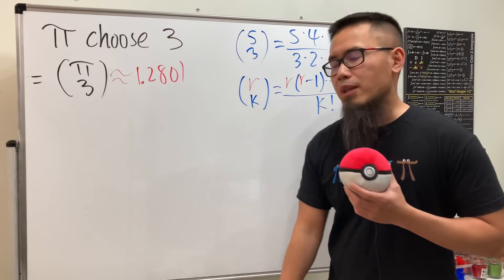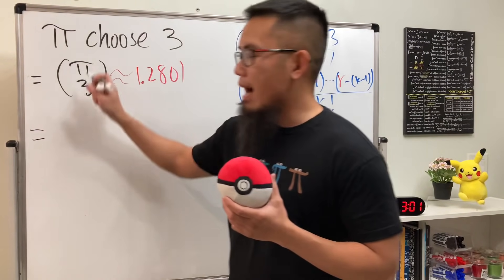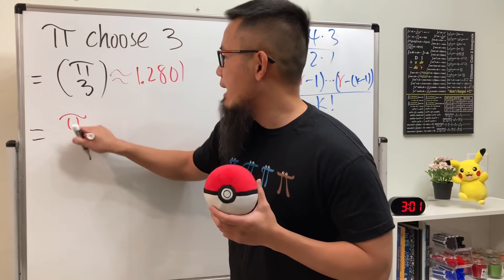So that's how you do it. This is called the generalized binomial coefficient. So as you can see over there, what we can do is the following: of course when you have pi, just start with pi right, this is the pi right here, very nice.